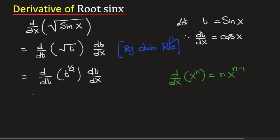So this will be equal to half times t to the power half minus 1 and dt dx which is cosine x.